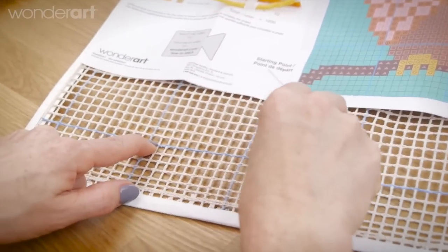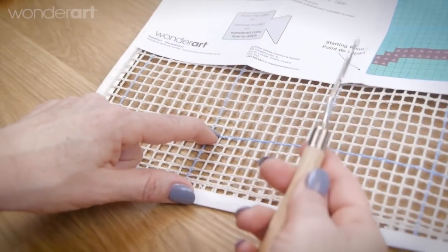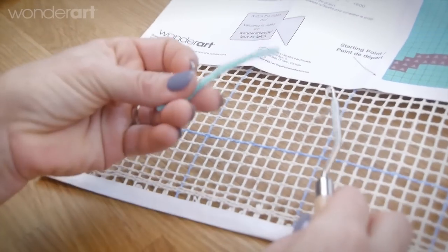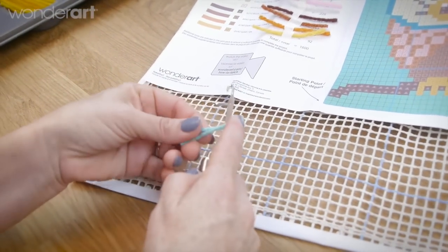That means we start here which is that first knot. To do that we want to take our tool and we want to take a piece of yarn that corresponds with the color on our chart, wrap it around the tool evenly.